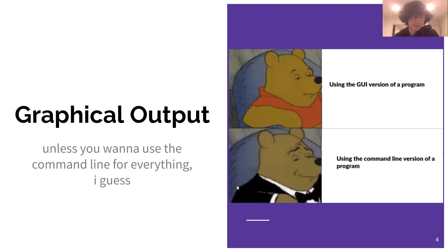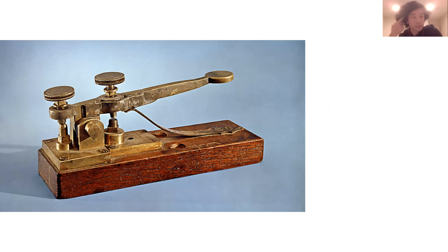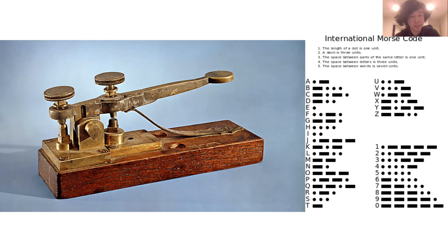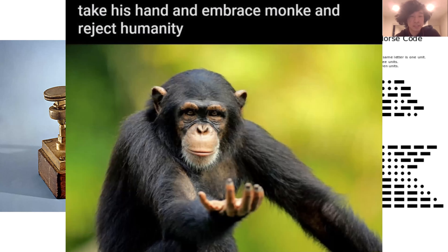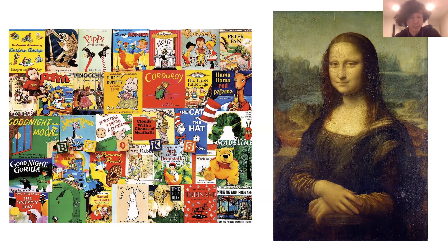This lecture is going to be about graphical output. We should talk about why we care so much about this topic and why it's so important. Back in the old days, we used telegraphs to communicate. These telegraph machines used Morse code with dots and dashes. But it turns out, being evolved from monkeys, humans don't actually have that much fun looking at dots and dashes all day. We actually prefer looking at pictures instead.